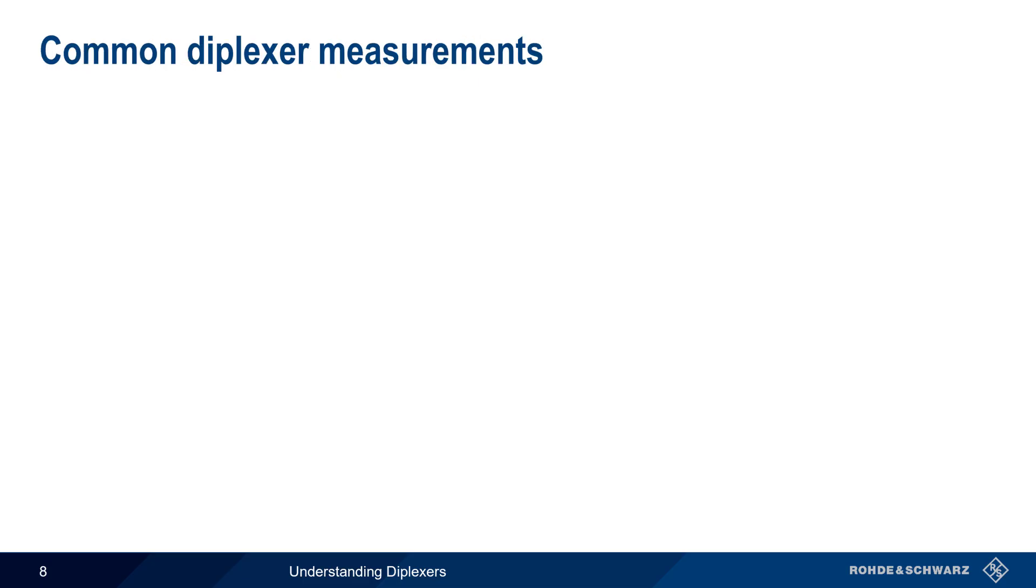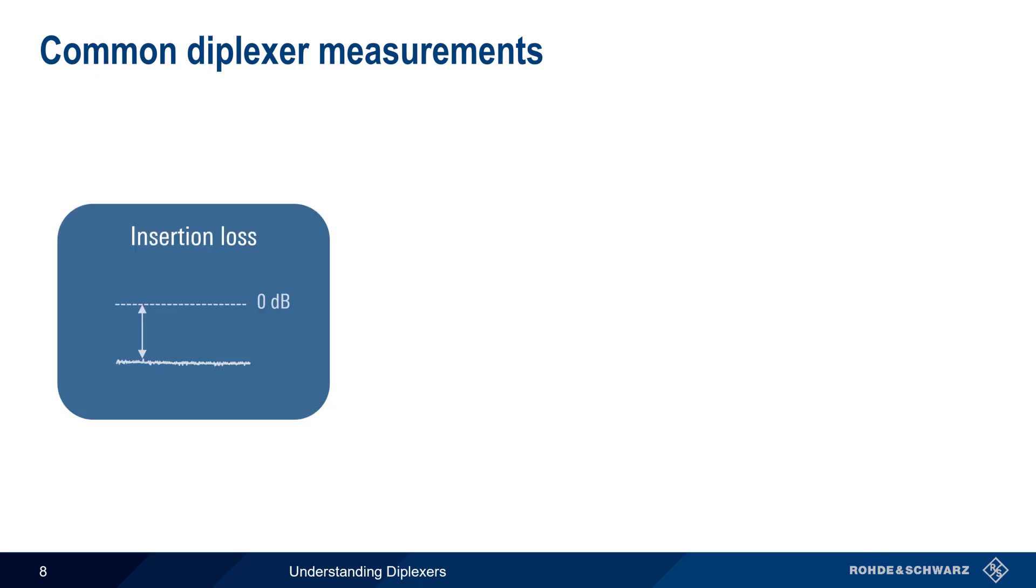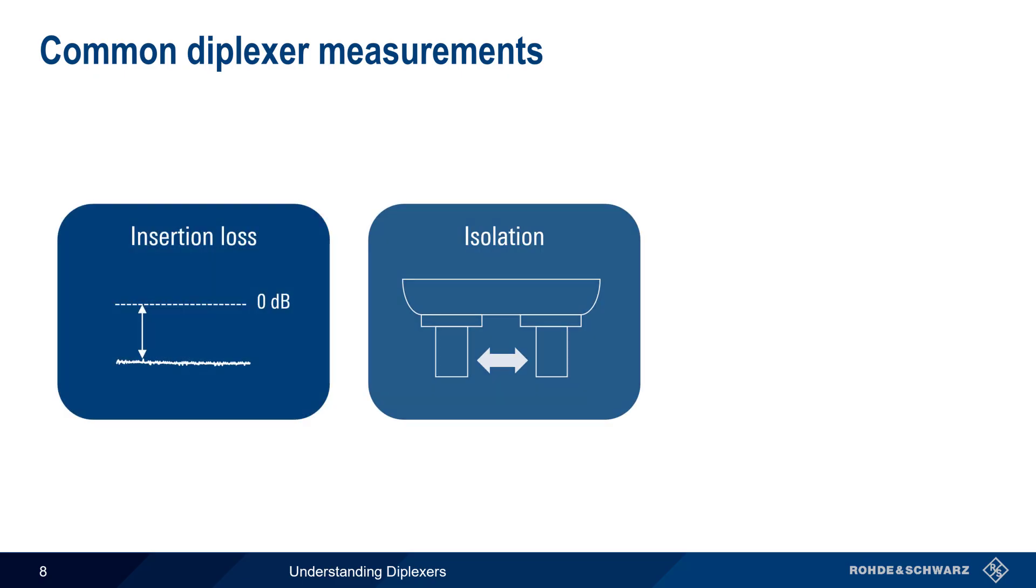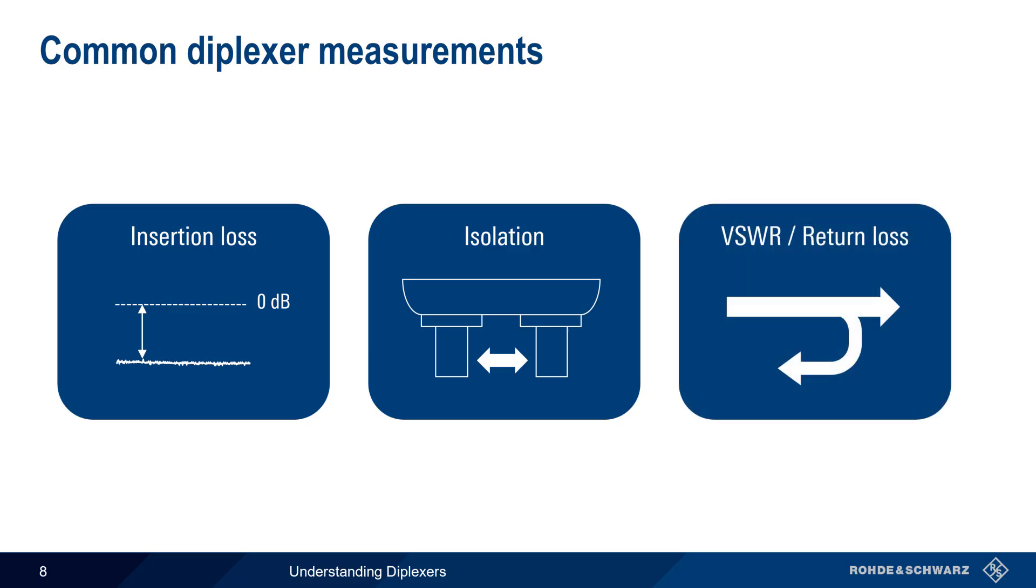There are three basic diplexor measurements: the insertion loss between each port and the common port, the isolation between the high and low ports, and the voltage standing wave ratio or return loss seen at each port.